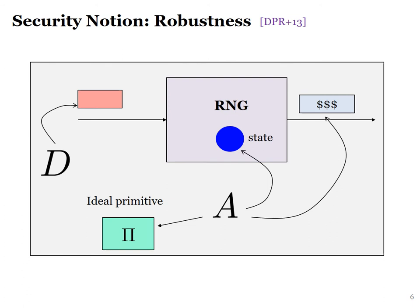Before we get into the technical details, let's define what we mean by security. Our target is the robust notion of Dodis et al., which is a standard goal of RNGs. Informally, an RNG should still provide security even in the face of state compromise or adversarial input.